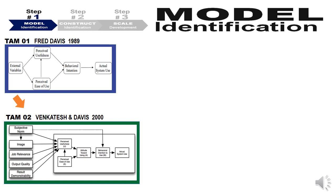A decade down the line, a set of antecedent constructs were created for perceived usefulness. On the cognitive side, we looked at communicatability, demonstrability, repeatability, job relevance, etc. for a given technology. On the affective side, how do people perceive you as a user of technology — how does it affect your status and prestige? That led to constructs like subjective norm and image, all driving perceived usefulness, and then the model continued.